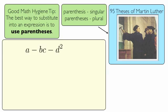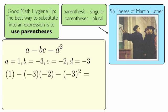So here's an example. We have a minus bc minus d squared. Here are some values that we need to substitute into this expression. This is doing it by the book - we write each of the values in parentheses, and when we simplify it, 1 will just remain 1.